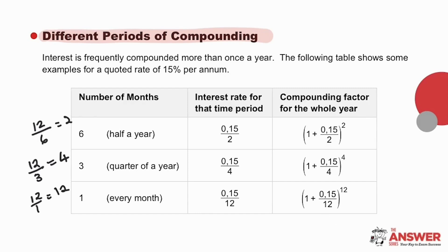The last column of this table refers to the compounding factor for one whole year. In each case, the compounding factor will be the sum of 1 and the interest rate for the particular time period to the power of how many times it is calculated per year. Half yearly, it will be calculated twice. Quarterly, four times. And monthly, 12 times.